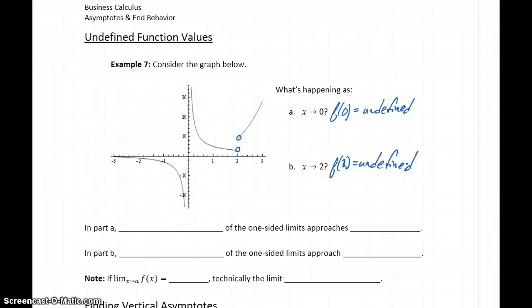We have two different points where our function is undefined, but the behavior associated with those points is different. In one case, we've got the open circle, so we've got that gap or break there. But around x equals 0, what we have is a vertical asymptote.